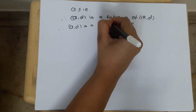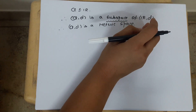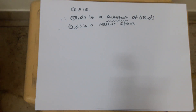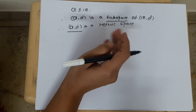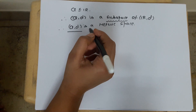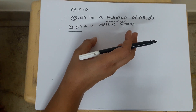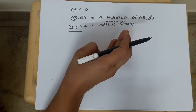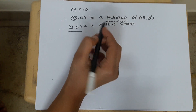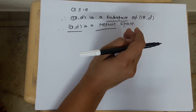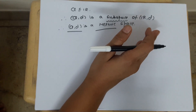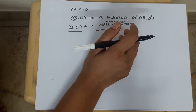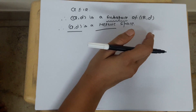I have already done this concept — it is a subspace of metric space topic. If you want, you can see the link in the description. Now we have to prove that the metric space Q,d is not complete. What do we need to prove? We need to find a sequence that is Cauchy but does not converge. We have to prove incompleteness with a specific example.